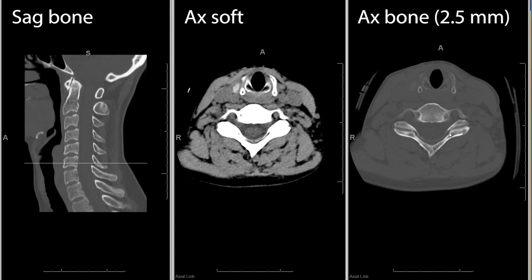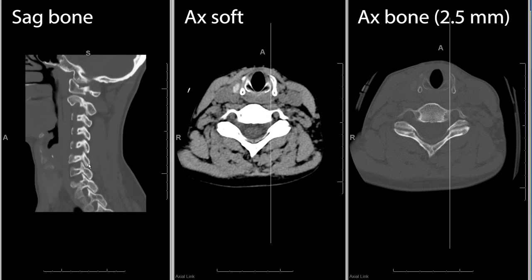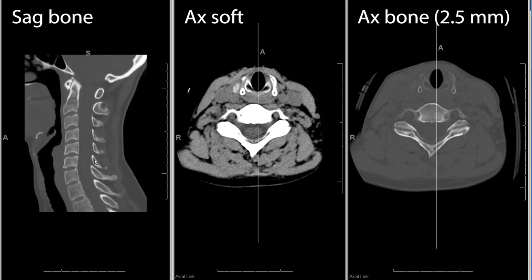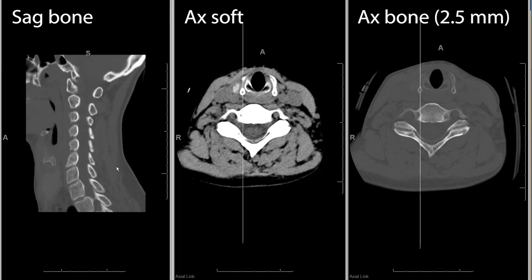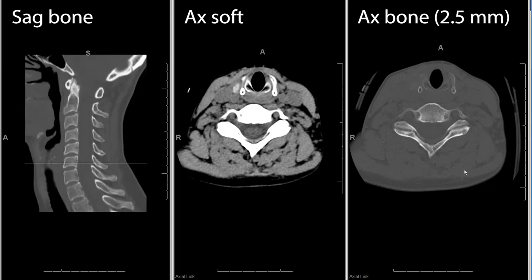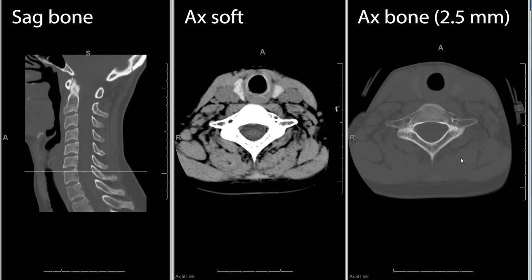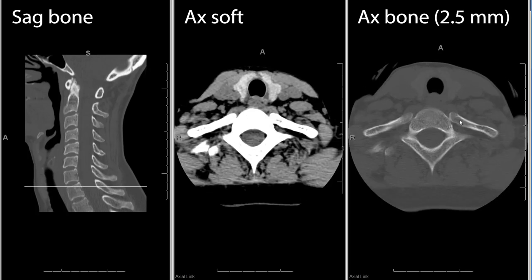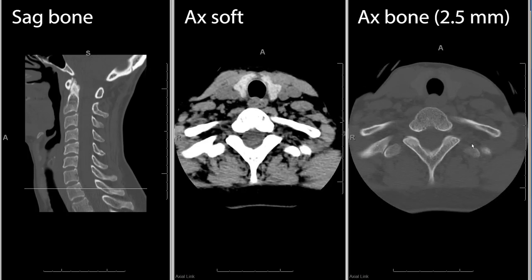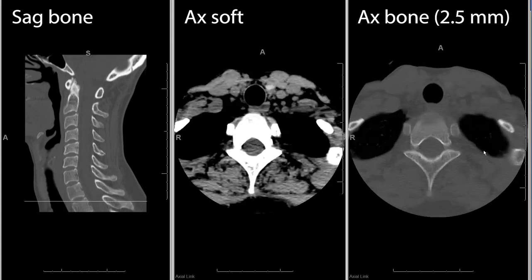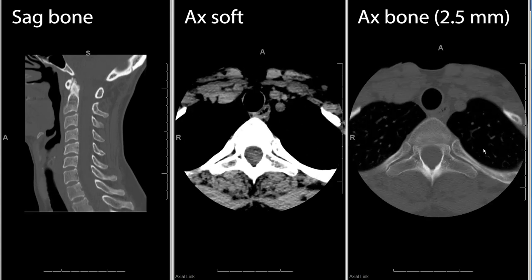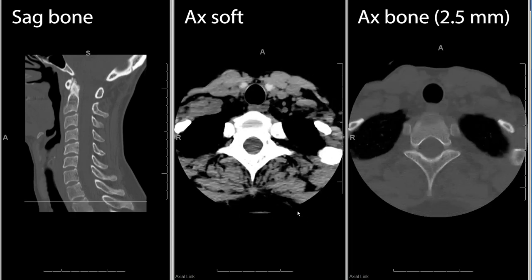For instance, you see a slice going through the facet where in the old days it would be very challenging to tell whether this was a jumped facet or not. But for us it's very simple because we go through and check on the reformatted images — we just happened to catch it between slices. Keep going down and you're going to see your upper thoracic vertebral bodies, the first rib and first couple of ribs, and your lung apices as well.